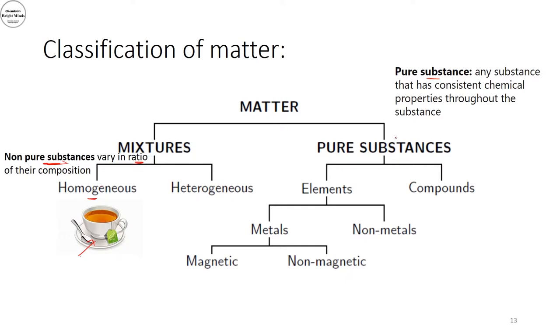The pure substances on the other hand have a certain definite ratios. They have chemical properties throughout the substance and they can be either elements or compounds for the pure substance. It has certain ratios.